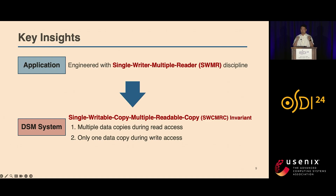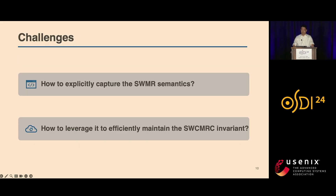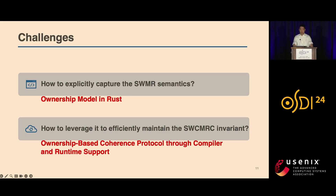Our idea is that we should leverage application semantics into maintaining that invariant in the system. But there are two big challenges. First, the semantics is hidden in applications — how to explicitly expose that to systems is challenging. Second, how to leverage this information to efficiently maintain coherence is also challenging. To address them, we find that the ownership model is an ideal tool to capture this semantics and transfer it into the system. We designed a lightweight ownership-based protocol to leverage this semantics for maintaining coherence, and our protocol eliminates the need for cross-server synchronization.